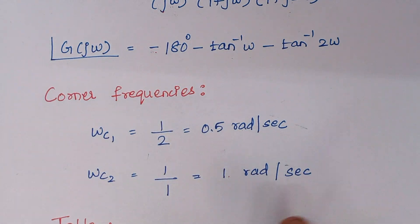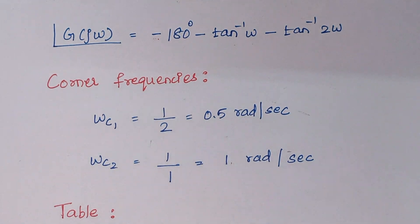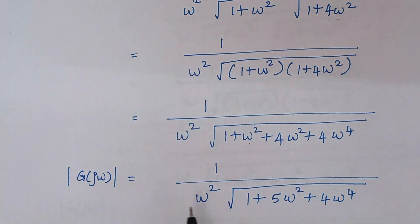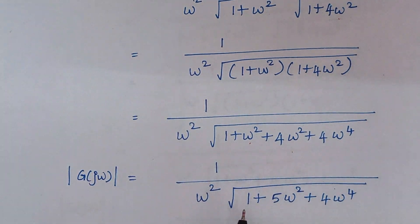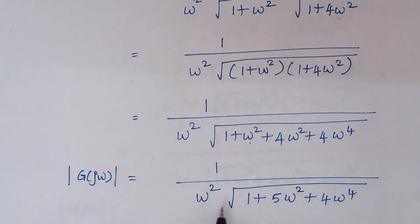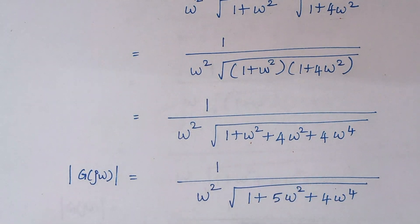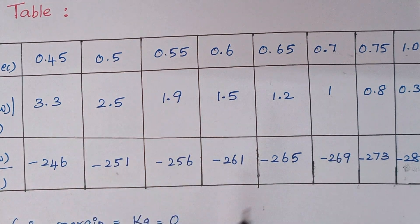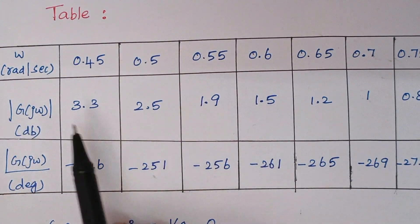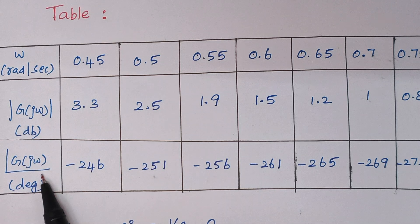For calculating phase angle, just substitute the different omega values from the table into the phase angle expression using a calculator. Similarly for magnitude, substitute the values of omega into the magnitude expression and write down the respective values in the table. Finally, we have formed a table which has magnitude as well as phase angle.